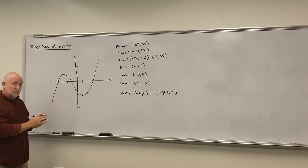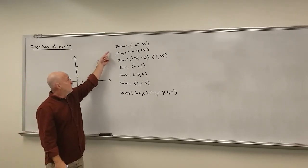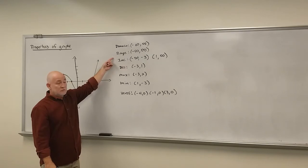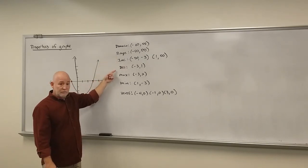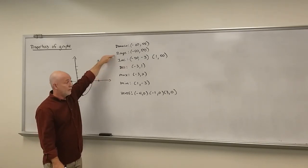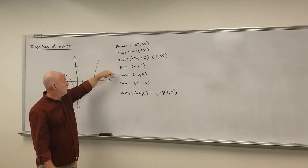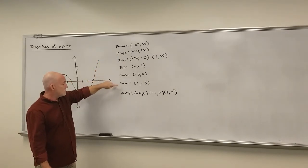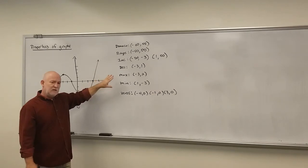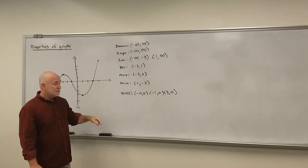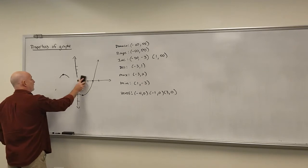So anytime you're given a picture, you should be able to find all these things: domain, range, where it's increasing and decreasing — remember, all those are intervals, and only the range is an interval on y — plus any maximums, minimums, and zeros. You might also need to identify where the graph is constant, but very few graphs have that.